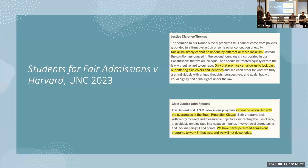Now we come to Students for Fair Admissions versus Harvard, just ruled on in June, and the University of North Carolina. Chief Justice John Roberts said these admission programs using race as a factor cannot be reconciled with the guarantees of the Equal Protection Clause found in the 14th Amendment — one of the Civil War amendments. Most striking is his statement that 'we have never permitted admission programs to work in that way, and we will not do so today.'